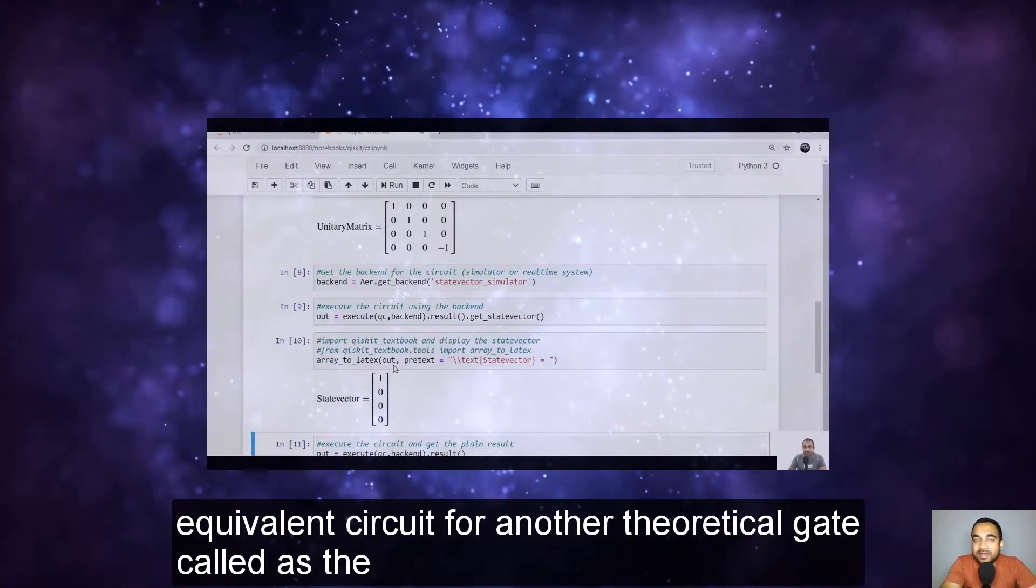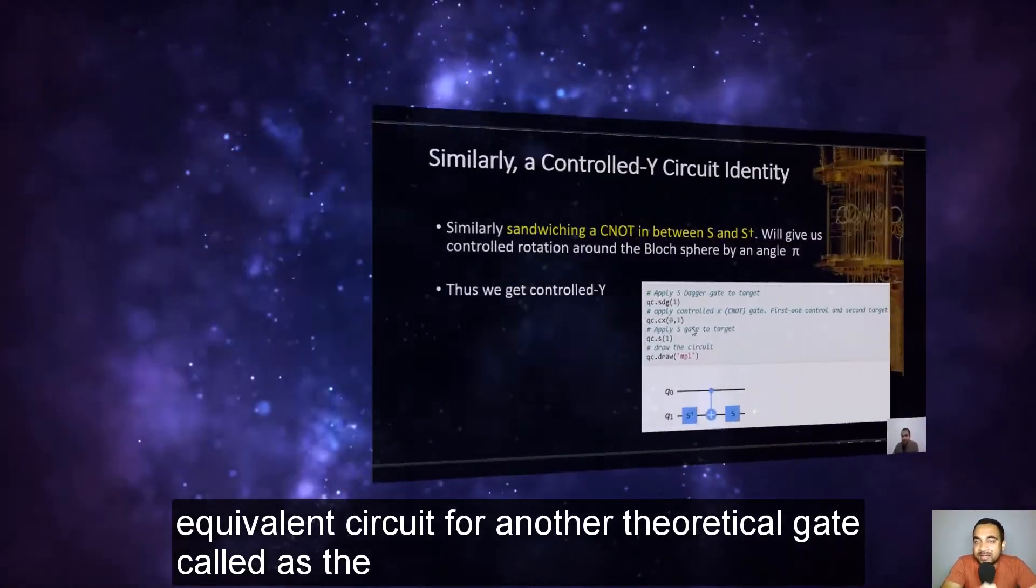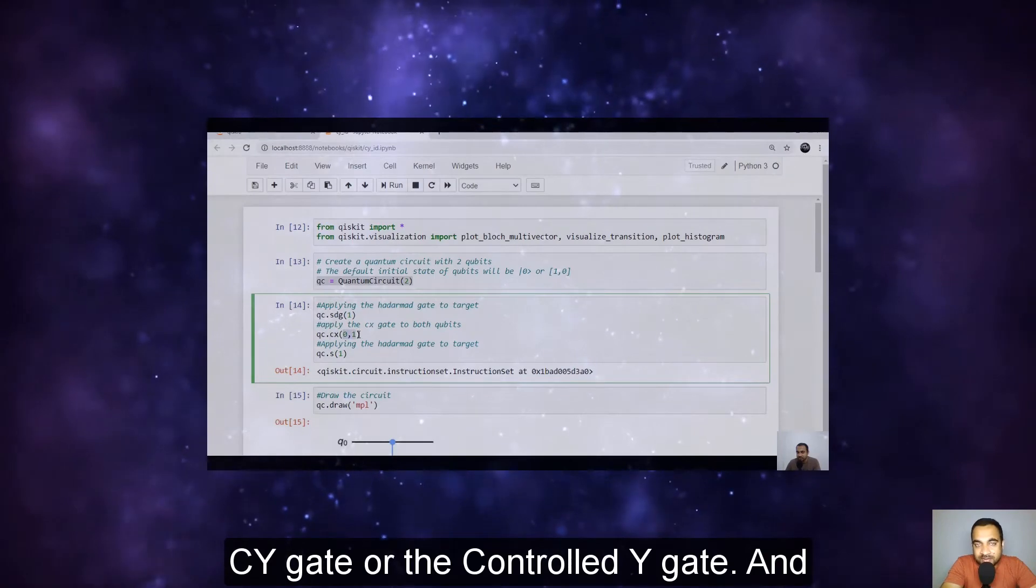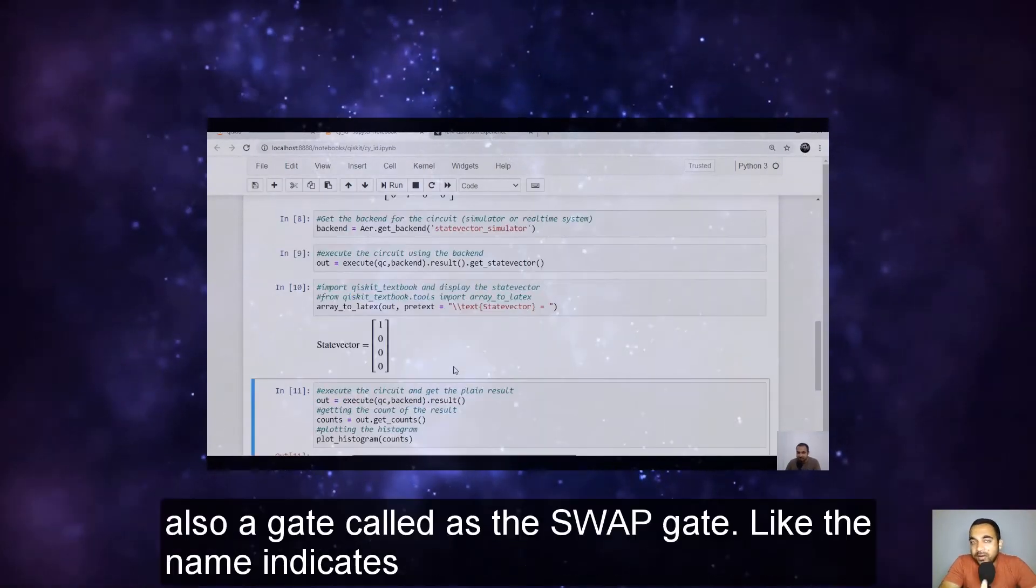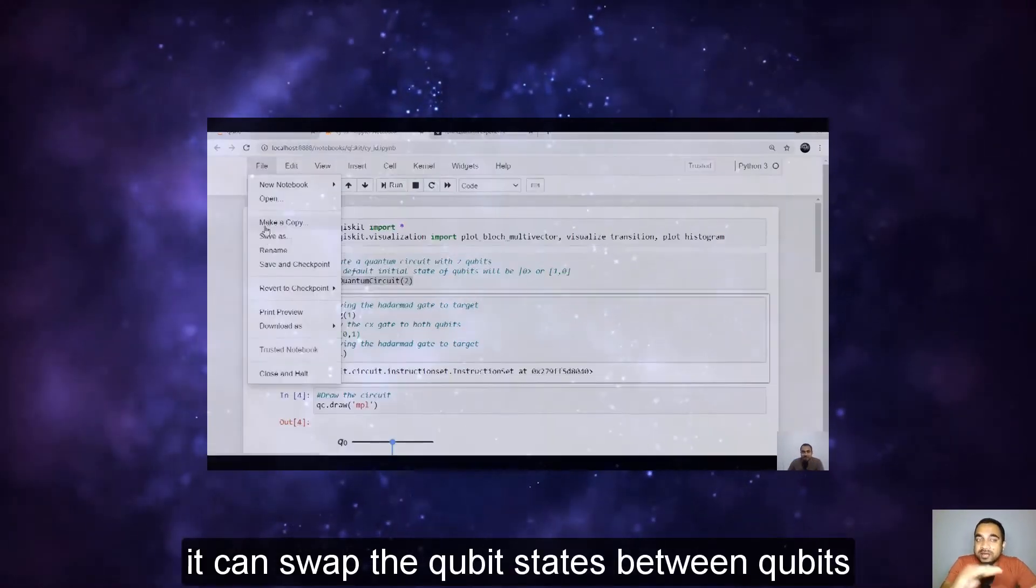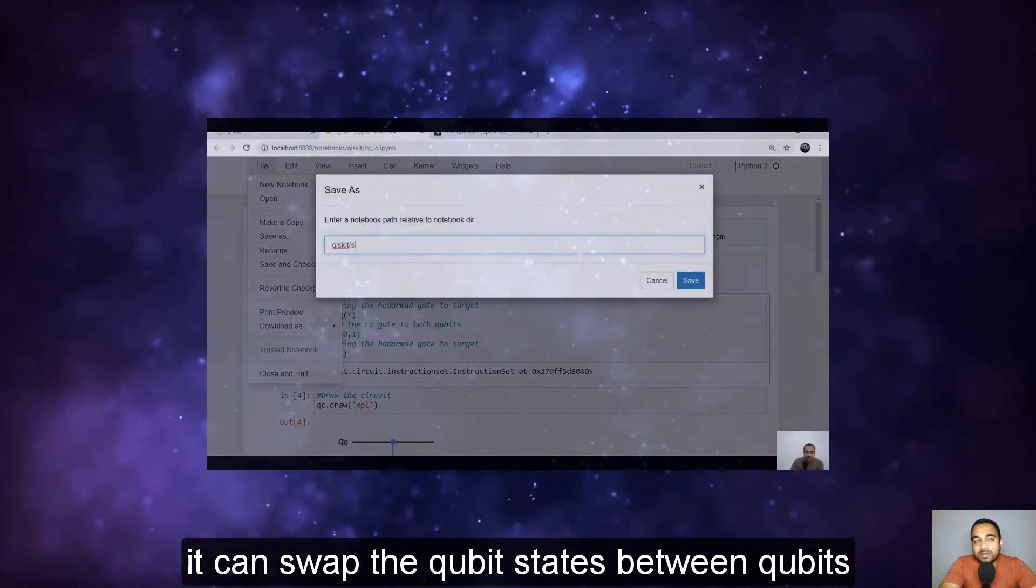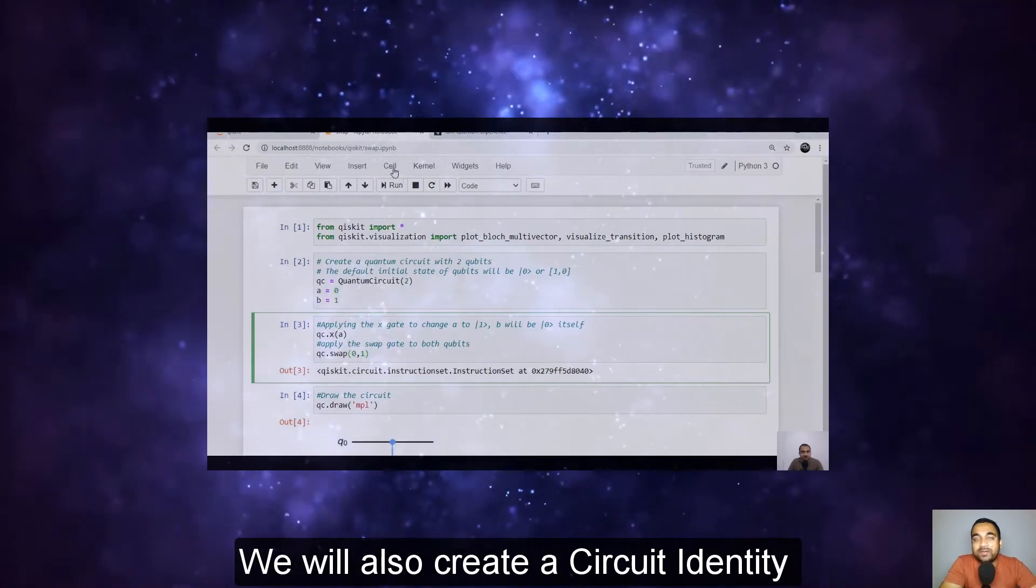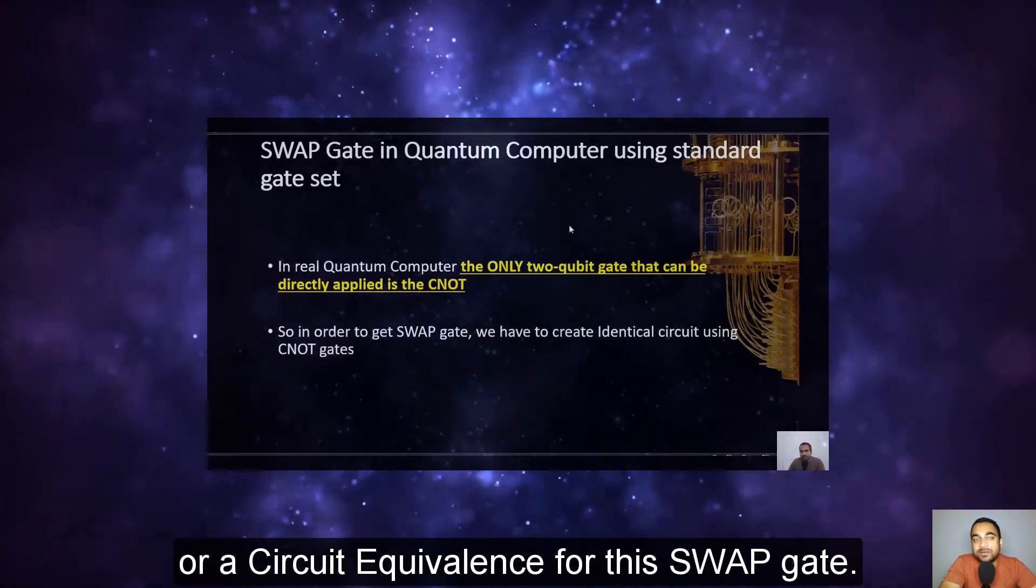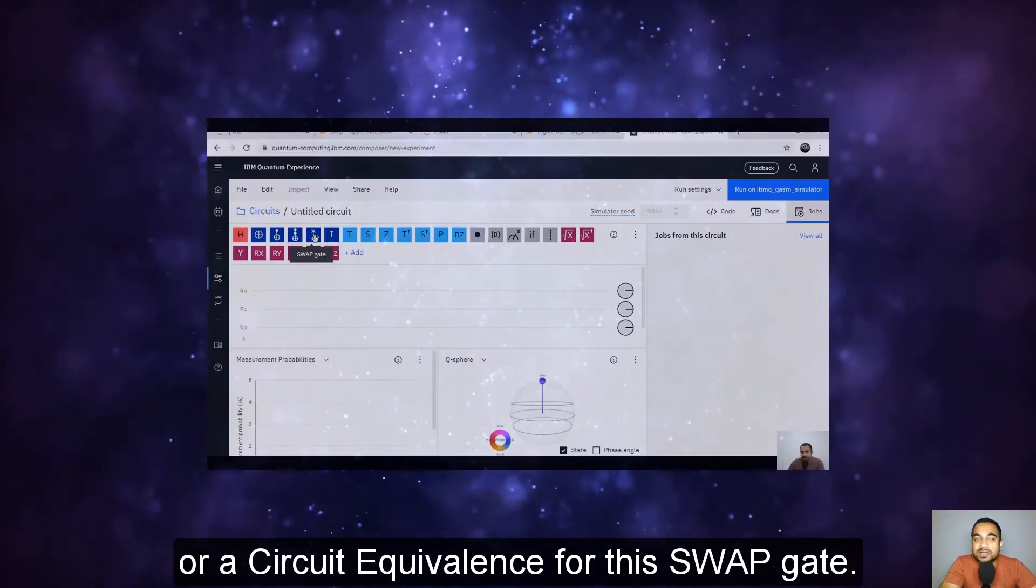And similarly we can create equivalent circuit for another theoretical gate called a CY gate or the controlled Y gate. And also a gate called a SWAP gate. Like the name indicates, it can swap the qubit state between qubits. We will also create a circuit identity or a circuit equivalence for this SWAP gate.